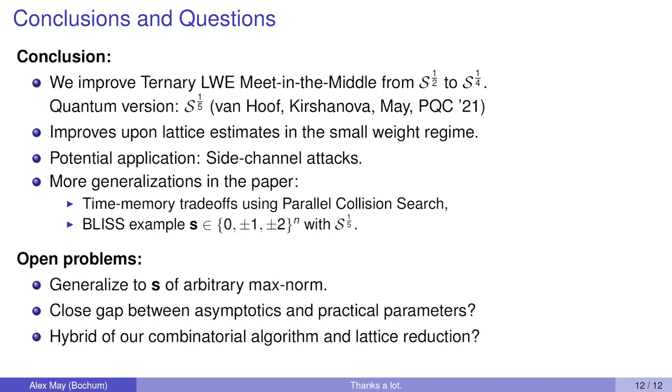This brings us to the open problems. To generalize S to arbitrary max norms and to analyze this, it seems that we need new mathematical methods, because our methods get very messy if you add new digits for S. There are two more interesting open questions. Can we close this gap between asymptotics and practical parameters that comes from guessing of small r coordinates? Is that really necessary or can we remove that? Last but not least, now we have a combinatorial algorithm which is best for the small weight regime, and a lattice reduction algorithm which is best for the large weight regime. Is there a hybrid algorithm that gives you the best of both worlds? That's all. Thanks a lot for your attention and goodbye.